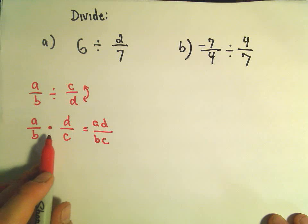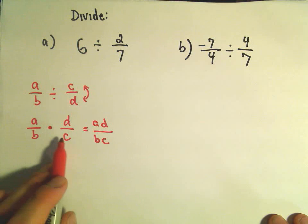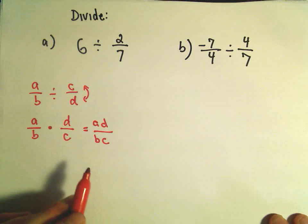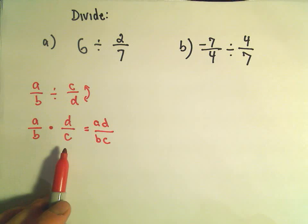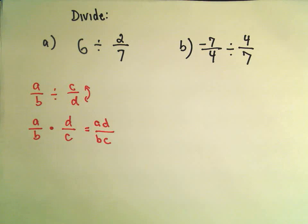So remember if you're adding or subtracting fractions, you have to have common denominators. But multiplication is actually a little bit easier because you just multiply across the top and across the bottom, and if you can reduce or simplify, you do. But other than that, that's it.